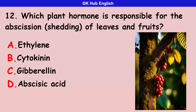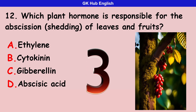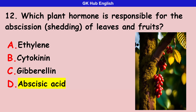Twelfth question: which plant hormone is responsible for the abscission — shedding — of leaves and fruits? Option A is ethylene. Option B is cytokinin. Option C is gibberellin. Option D is abscisic acid. Correct answer is abscisic acid.